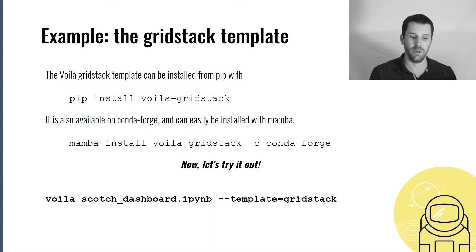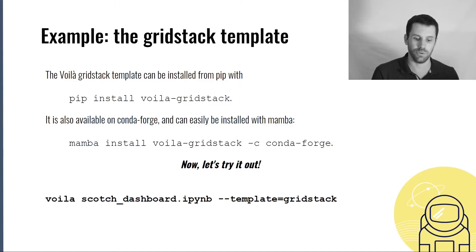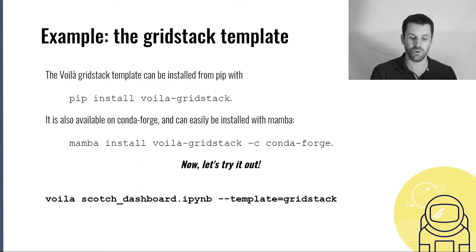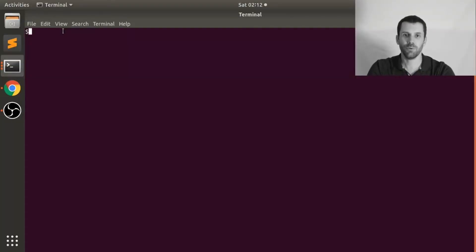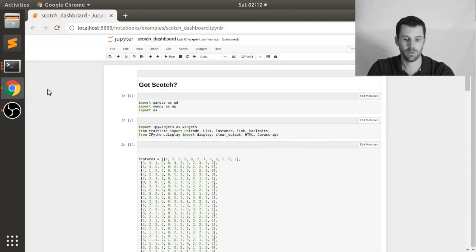Let's check out the grid stack template. The Voila grid stack template can be easily installed from pip by typing 'pip install voila-gridstack'. It is also available on Conda Forge and can be installed with Mamba by typing 'mamba install voila-gridstack -c conda-forge'. I have a notebook called scotch dashboard and I can run it in Voila by typing 'voila scotch_dashboard.ipynb --template=gridstack'. Let's dive in — in the terminal, inspecting the current working directory, I can see the scotch dashboard notebook.